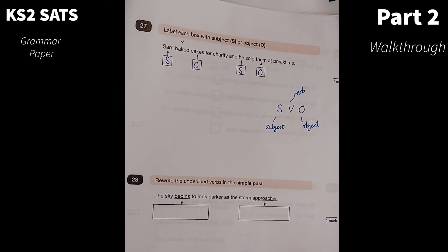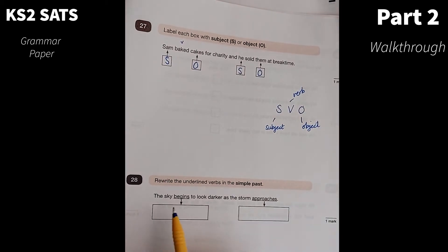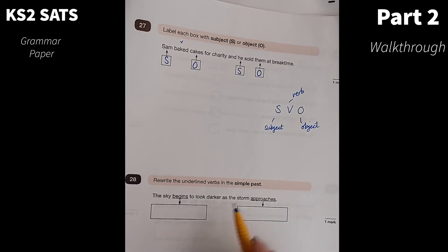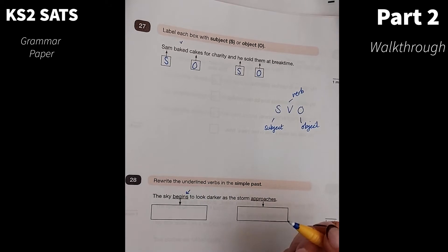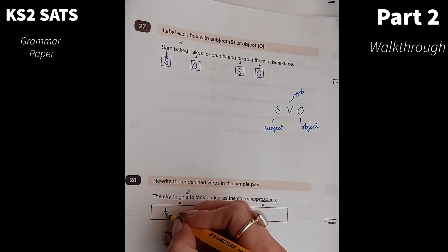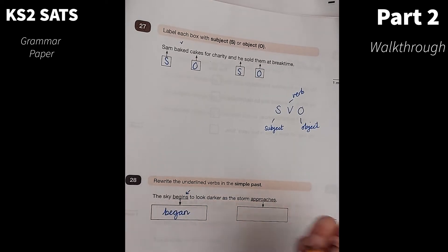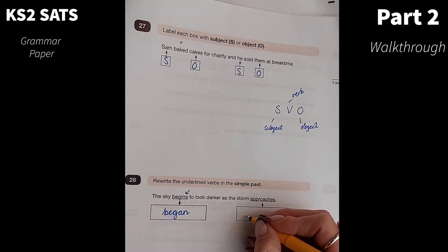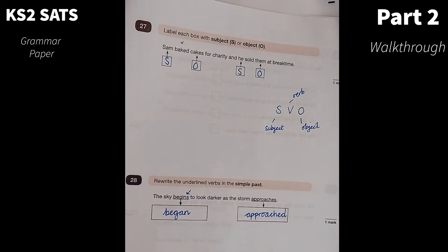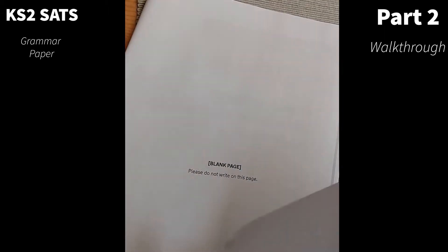Number 28. Rewrite the underlined verbs in the simple past. The sky begins to look darker as the storm approaches. This here is an irregular verb. We need to think, what's that going to be? Begins is in the present tense. So in the past tense, that would be began. It wouldn't be beginned. And to look darker as the storm approaches, well, very simply, that would be approached. You would need to make sure that you got the spelling correct in these in order to receive that one mark. And it's a really simple one mark.